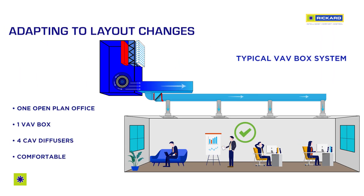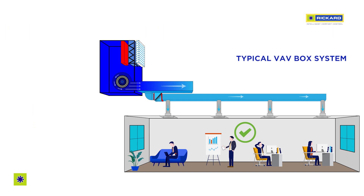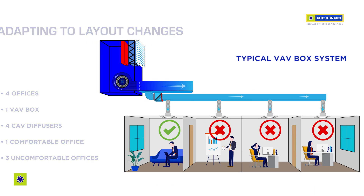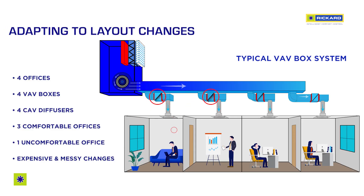When the layout of a building is changed and the control zones are moved around or increased, it becomes important that the system installed can easily adapt to those changes. When a VAV box system is installed and the number of zones are increased, more VAV boxes must be installed to create these zones. This is not practical because the ceiling must be opened to gain access and secondary re-ducting and VAV boxes must be added. This is usually not done as the changes are too expensive, messy, disruptive and impractical. When the system cannot adapt to the layout change, the result is invariably unhappy and uncomfortable occupants.